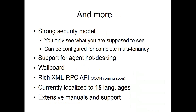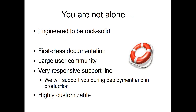Keymetrics is built from scratch with a strong security model so you can decide who sees what. You can configure Keymetrics to be a completely multi-tenant system where different users are fully insulated and unaware of each other. Keymetrics supports agent hot-desking and agent login, meaning a person is not tied to an extension — specific people can work at different times using different extensions and Keymetrics tracks the person, not the physical extension. Keymetrics offers wallboards, an XML-RPC API for exporting everything, with JSON support coming soon, and is currently localized to 15 languages with more in the pipeline.